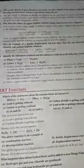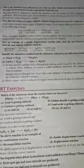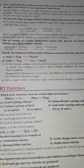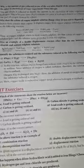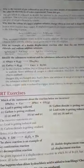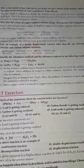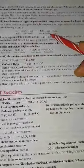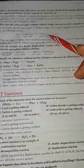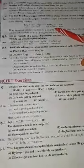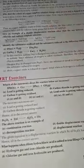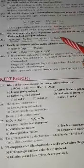Next question: why does the color of copper sulfate solution change when an iron nail is dipped in it? This is a displacement reaction. When we put an iron nail in copper sulfate solution, the color changes due to the formation of ferrous sulfate, also called iron(II) sulfate.